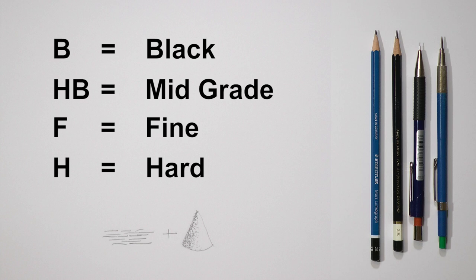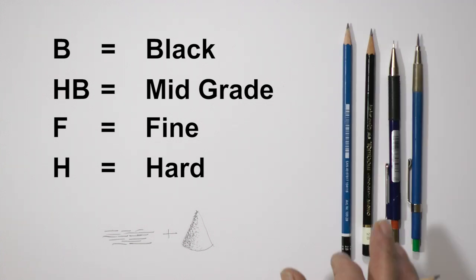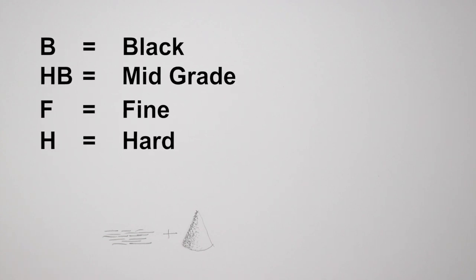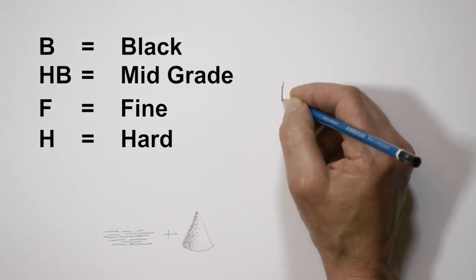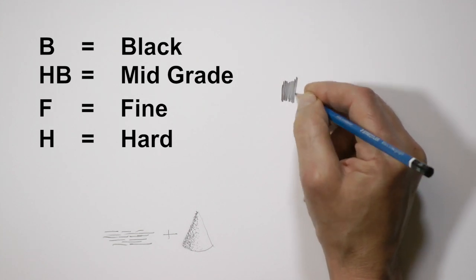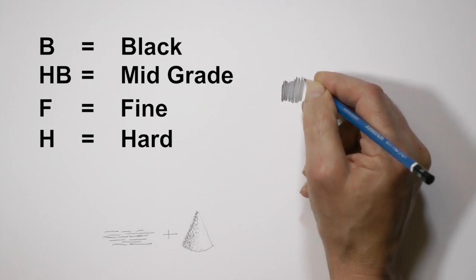Why add the clay? Well, pure graphite makes a black mark. The clay dilutes and lightens the marks. So the more clay we add to the mix, the harder and lighter is the result, which is the H grades. The more graphite, less clay, the softer and darker the lead becomes. They're the B grades.